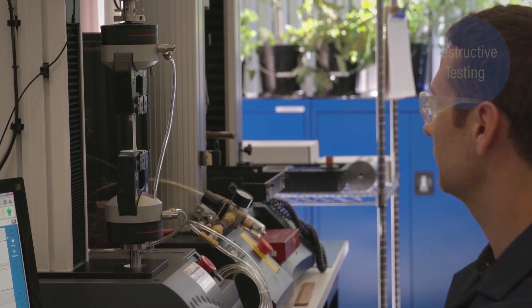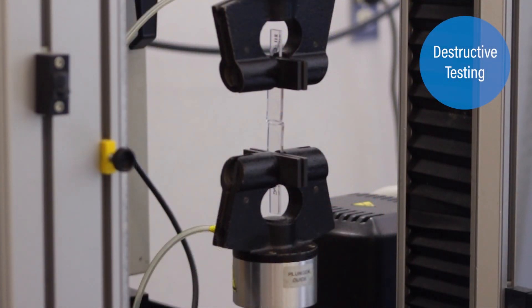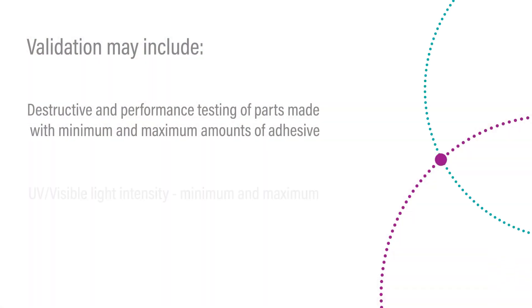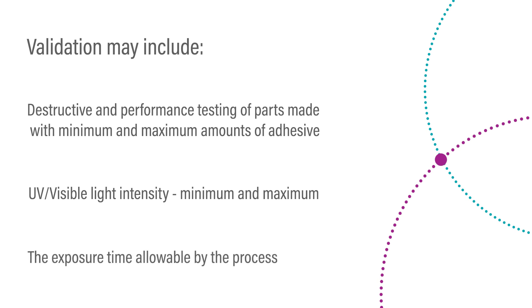For the UV visible light curing adhesive process, validation may include destructive and performance testing of parts made with minimum and maximum amounts of adhesive, UV visible light intensity at minimum and maximum intensity, and the exposure time allowable by the process.